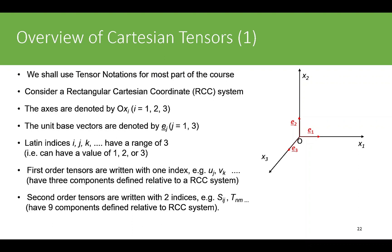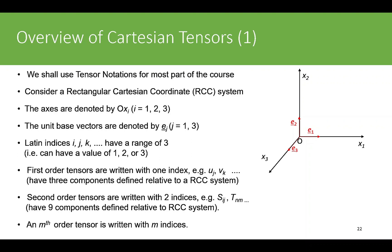An Mth order tensor is written with M indices. A repeated index means summation over the range of index. For example, sigma_kk would mean sigma_11 plus sigma_22 plus sigma_33. Remember, k can have a value from 1 to 3 in rectangular Cartesian coordinate system. Similarly, T_ii would mean T_11 plus T_22 plus T_33, so you have to add those components together.